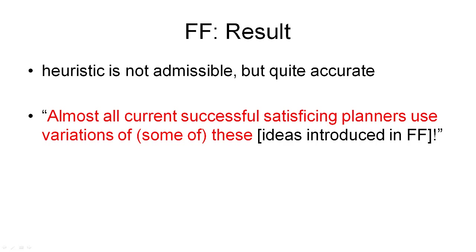Now you've seen the heuristic computed by the FF planner. Here is a summary of the result. The heuristic we've computed is not admissible — that means FF is not guaranteed to return a minimal plan. But this heuristic is quite accurate, which means FF finds a plan reasonably fast because it has to explore a smaller portion of the search space than planners using a less accurate heuristic. Also, the heuristic is efficient to compute, since both functions introduced can be computed in polynomial time. This can be nicely summarized with a statement from Jörg's slides: almost all current successful satisficing planners use variations of some of the ideas introduced in FF.